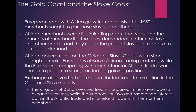The exchange of slaves for firearms contributed to state formation on the Gold and Slave Coast. The Kingdom of Dahomey used firearms acquired in the slave trade to expand its territory. The kingdoms of Oyo and Asante had interests in both the Atlantic trade and an overland trade with their northern neighbors. The African kings and merchants of the Gold and Slave Coast obtained slaves from among the prisoners of war captured in conflicts between African kingdoms; however, it is unclear if slave-taking was the motivation for these wars in the first place.